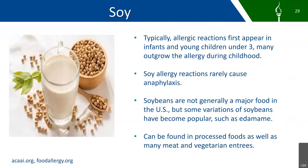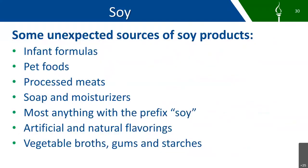Soy is another one of the Big Eight. Typically, allergic reactions first appear in infants and young children under the age of three. Many will outgrow the allergy during their childhood. Soy allergy reactions rarely cause anaphylaxis, and soybeans are not generally a major food in the United States, but some variations of the soybean have become very popular, such as edamame. Soy can be found in processed foods as well as many meat and vegetarian entrees. Some places you may find soy include infant formulas, pet foods, processed meats, soaps and moisturizers, most anything with the prefix 'soy,' artificial and natural flavorings, vegetable broths, gums, and starches.